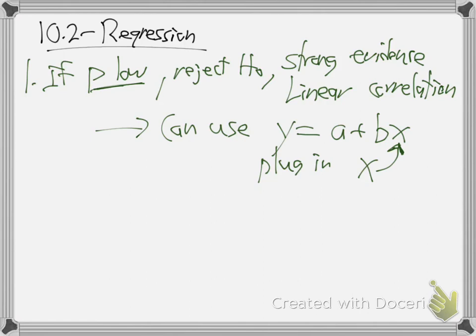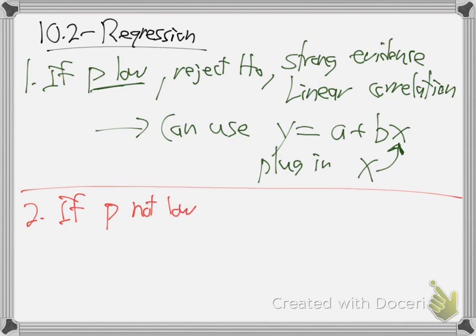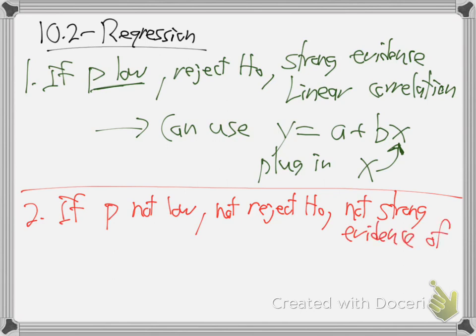It didn't come close to the actual bear, but in general it'll work. In general it's reliable, it's usually reliable. Case two: if the p is not low — in other words, it's not under 0.05 — we do not reject the null. There is not strong evidence of a linear relationship.